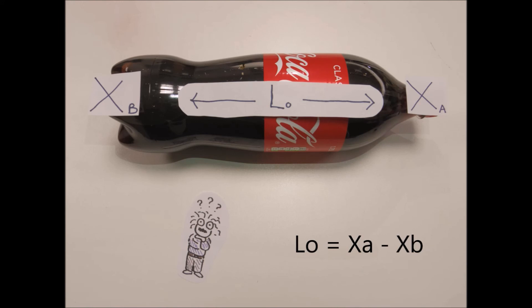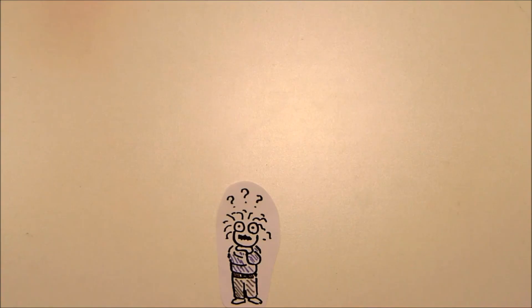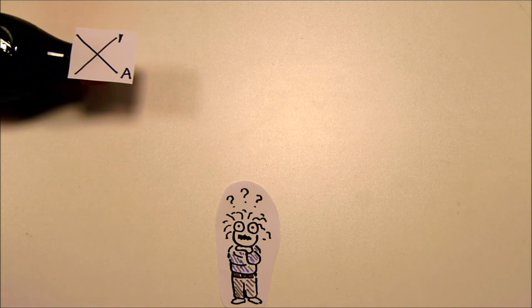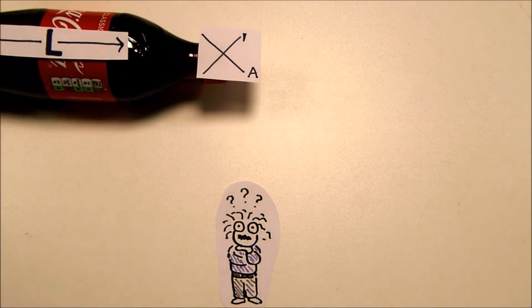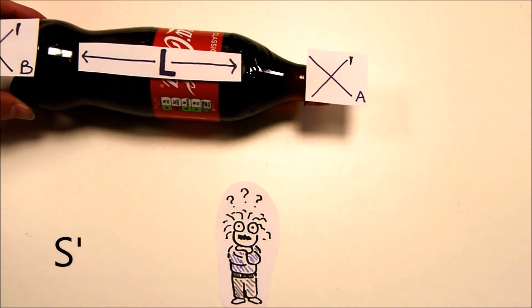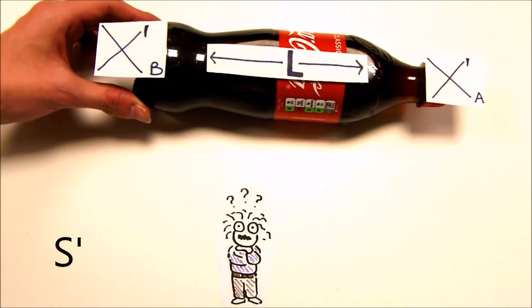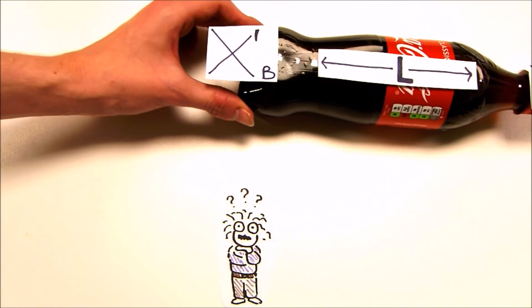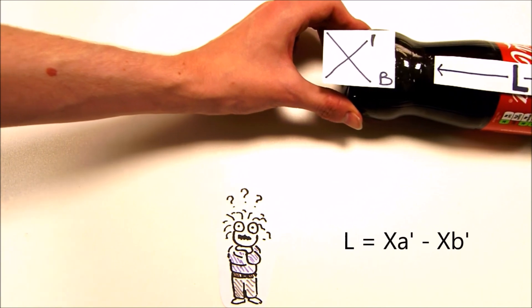In the rest frame, XA and XB do not change with time and therefore do not need to be measured at the same time. However, if the Coke bottle is moving to the right with a velocity V, then XA and XB must be measured simultaneously. When the Coke is moving to the right, the frame is labeled S', the left end XB' and the right end XA'. In S', the length of the moving bottle L then equals XA' minus XB'.